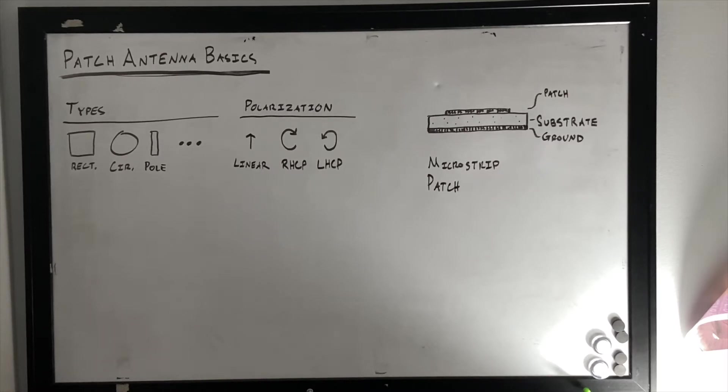On the right-hand side of the board, you can see a basic microstrip patch. This is a simple two-layer. You can see the ground on the bottom, the substrate in between, and the patch on top, and this models typical microstrip behavior.